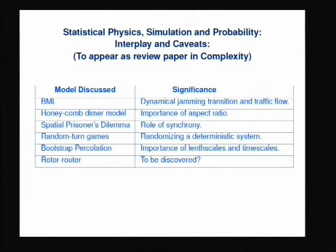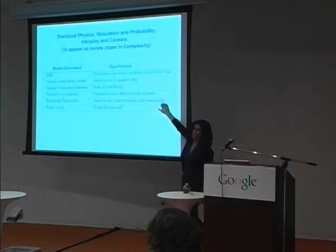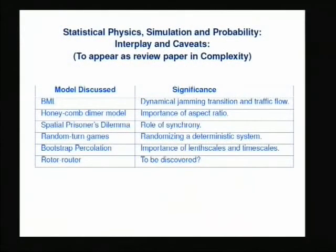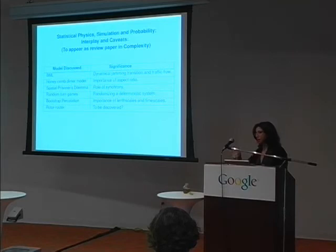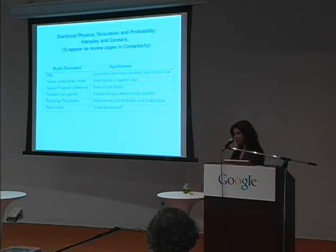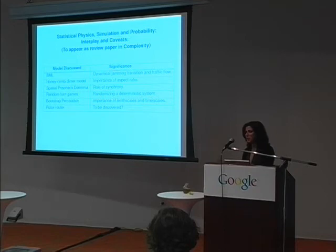Bootstrap percolation is really interesting because it's one of the only models where rigorous proofs about its behavior exist. The proof shows the percolation threshold to be very different from what experiments show. After a few years of working it out, we realized you have to implement bootstrap percolation on a lattice that's like 100 billion by 100 billion sites before you'd even get close to the numerical results. Bootstrap percolation is now used often as a model for jamming in random media. So the good question is: if I'm interested in looking at a gel or some polyelectrolyte material and want to understand its jamming properties, which result do I care about — the computer simulation or the asymptotic mathematics? We have to figure out which is the relevant regime for our problem.